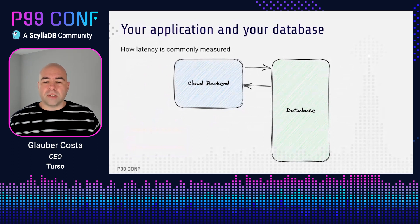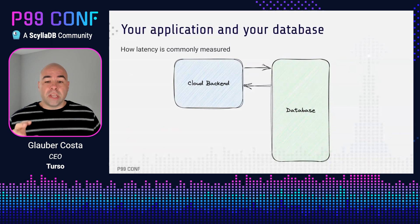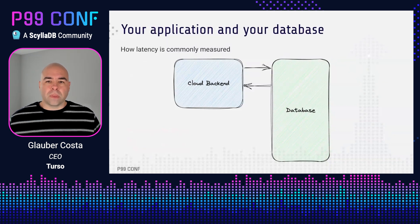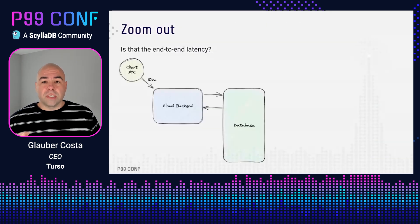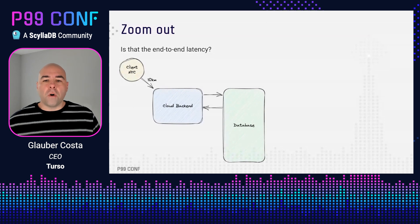If you want to compare the latency between two database systems, you put the clients on a good network that is close to the database, keep your workload constant, compare, and write down your conclusions. The problem is, for a class of applications, this doesn't tell the whole story. If we exclude batch analytics, where throughput tends to matter more than latency anyway, and focus on the systems where there is a human user on the loop, the user will be physically somewhere. So let's zoom out to understand this a little bit better.